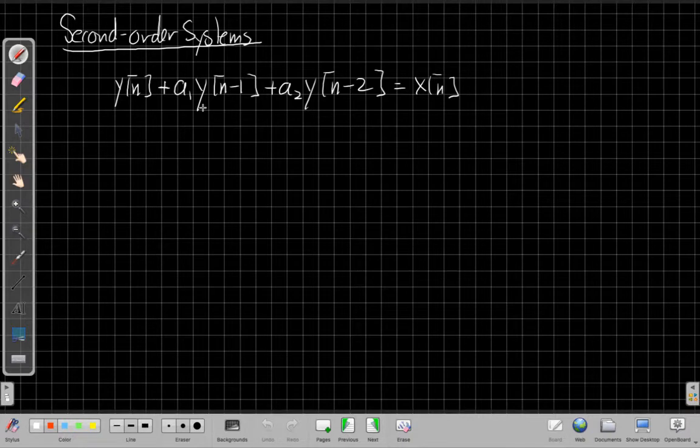that's what tells me it's a second order system. But I do have these two coefficients, a1 and a2, that I need to think about in terms of how the system, or determine the behavior of the system. We'll see in a minute.